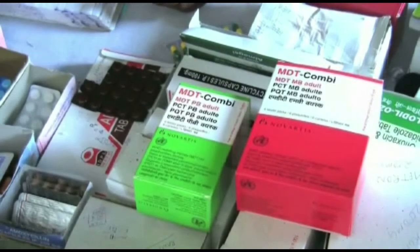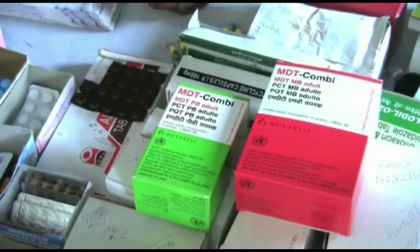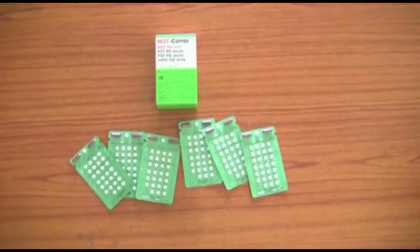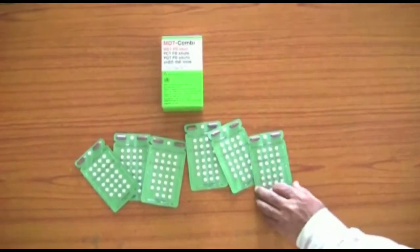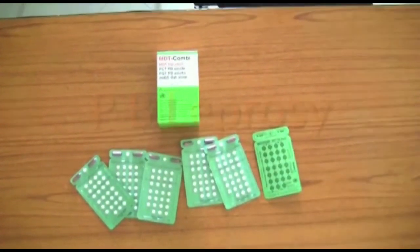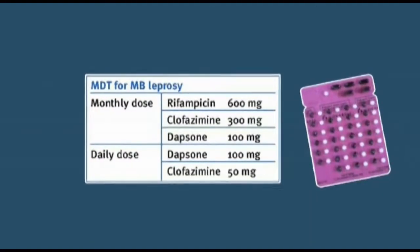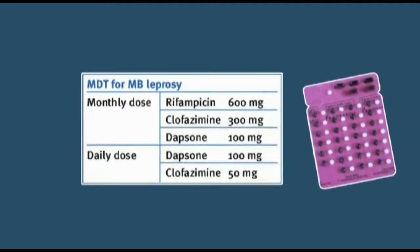How to decide which treatment a patient needs? Some patients have a mild infection. This can be cured by treating the patient with 2 drugs for 6 months — this type of infection is called paucibacillary or PB leprosy. Other patients may have a more serious infection, cured by treating with 3 drugs for 12 months — this is called multibacillary or MB leprosy.